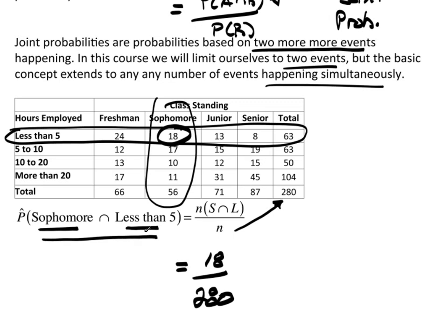So that's the basic idea behind a joint probability. It's a probability of, for this class, two things happening at the same time. We won't take it beyond the two events.